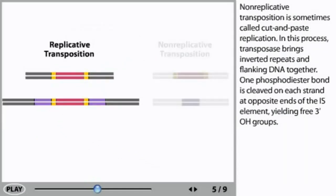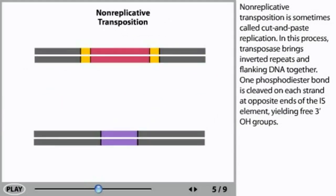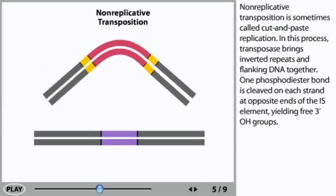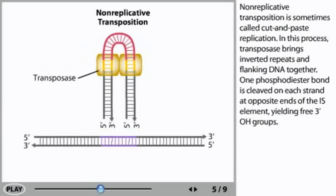Non-replicative transposition is sometimes called cut-and-paste replication. In this process, transposase brings inverted repeats and flanking DNA together. One phosphodiester bond is cleaved on each strand at opposite ends of the IS element, yielding free 3' OH groups.